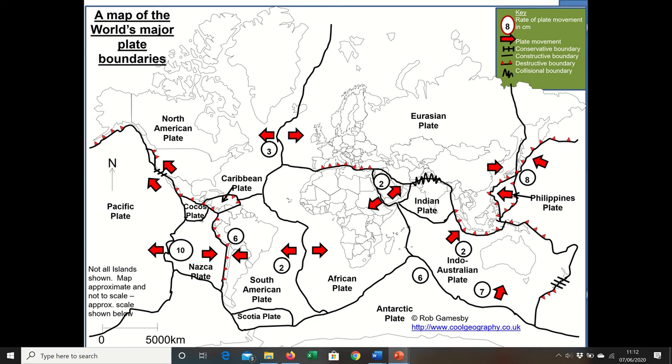You've got a map there of the earth's tectonic plates so you can see there's major ones like the Eurasian, North American, Pacific, Nazca, South American, African, and Indo-Australian and Indian. Then we do have smaller ones like the Cocos plate. The earth's crust is fractured into these huge chunks and then we've got boundaries between them.